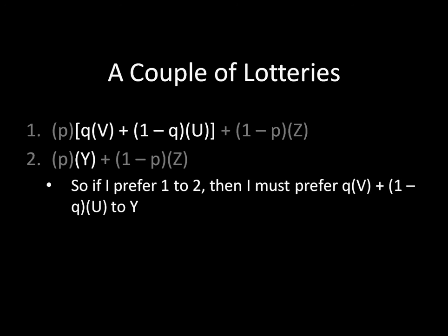Completeness and transitivity make perfect sense — it's really strange if an individual's preferences are not complete and transitive. And while independence is straightforward without compound lotteries, once you introduce compound lotteries, you actually see a lot of people violating expected utility theory. I'm going to show an example of this in the next lecture when I talk about the Allais Paradox. Hope you enjoyed this, and I hope to see you next time. Take care.